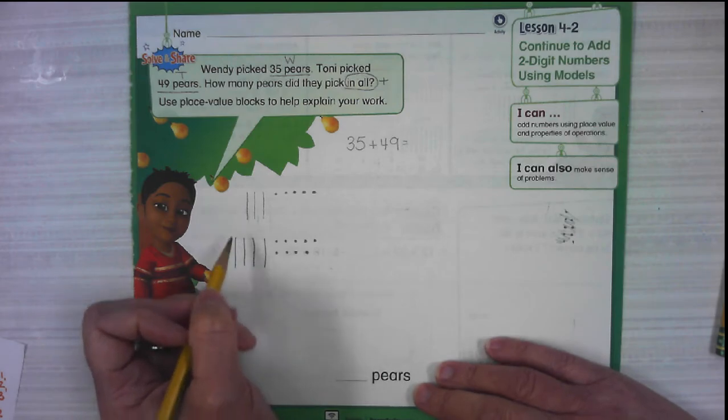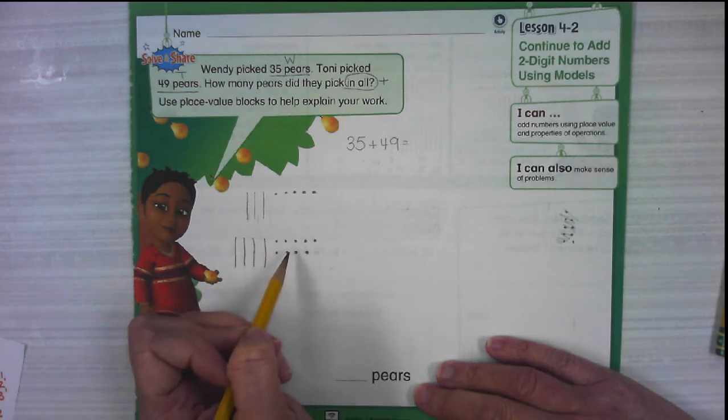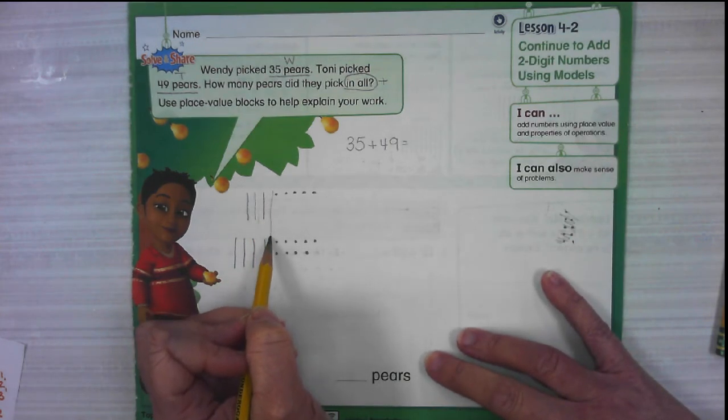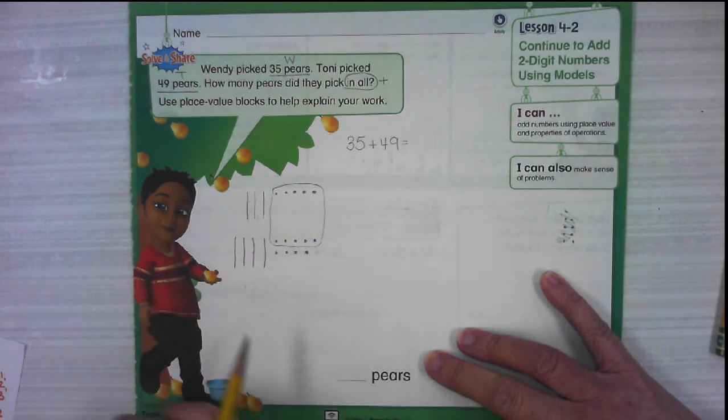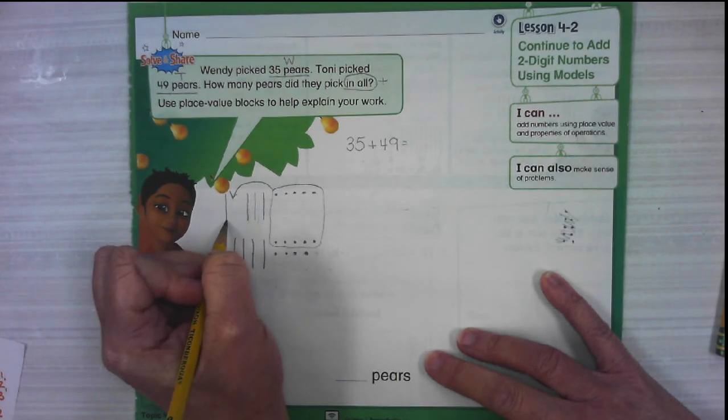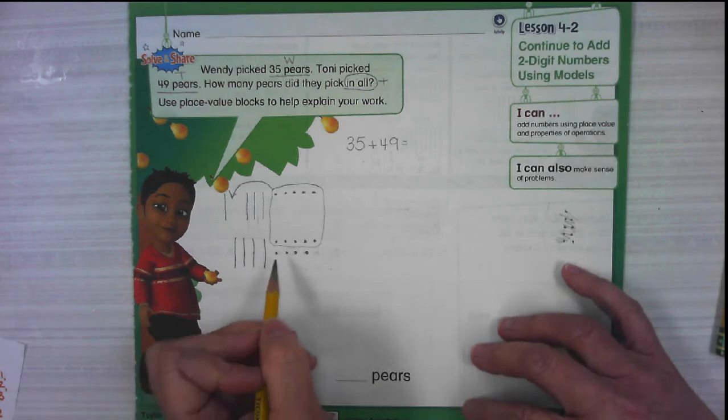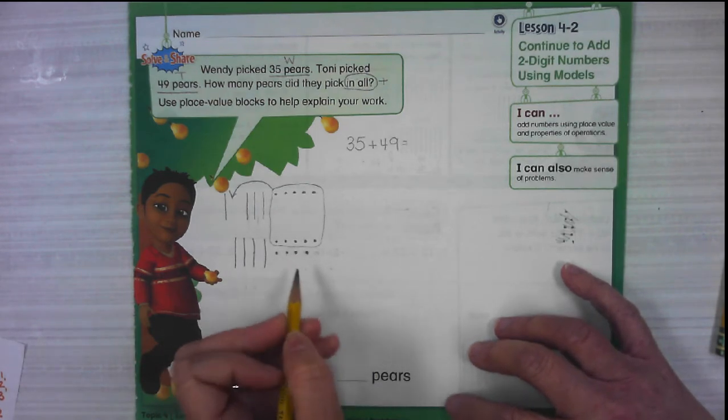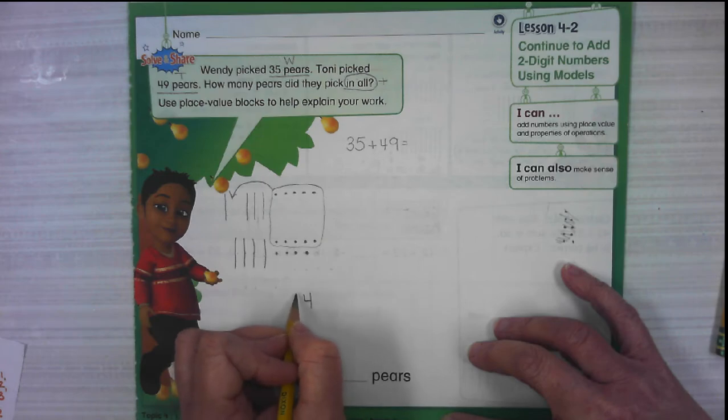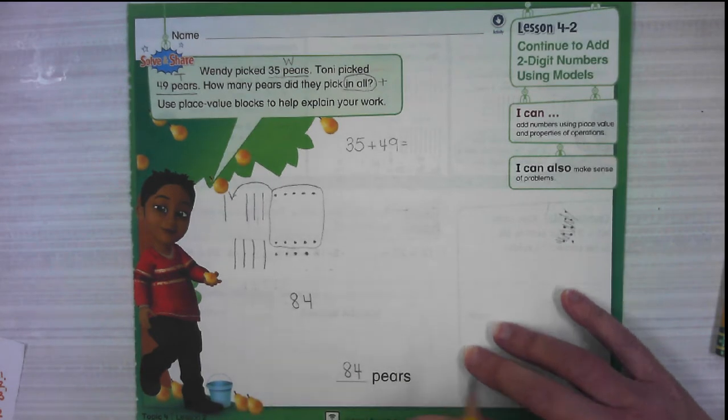So now I need to put these together. We're going to start with the ones. I see a row of five and a row of five. I know that's 10. We can't have more than nine in the ones place. So I'm going to take these and put these ones together to make a 10. And I'm going to move it over here to the tens place. So these ones are now in the tens place. I didn't make any extras. And down here we have one, two, three, four. So we have four left in the ones place. We have 10, 20, 30, 40, 50, 60, 70, 80. So when we have an eight in the tens place, that's 80. So all together, Tony and Wendy have 84 pears.